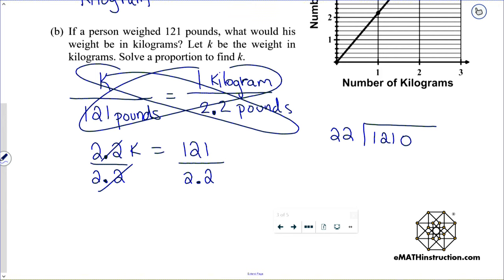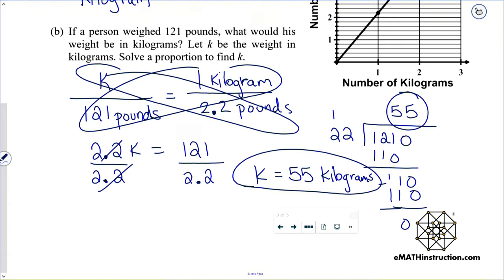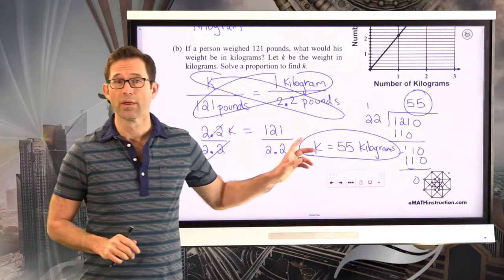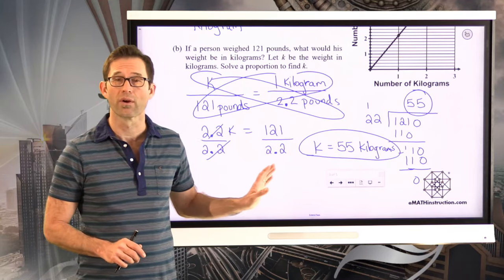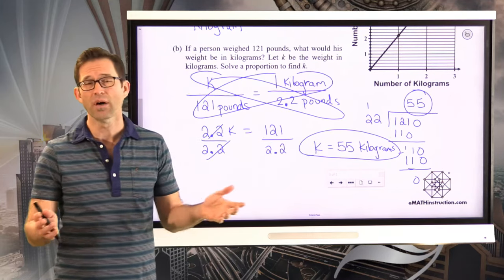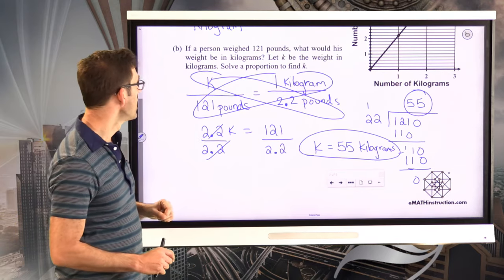But then we could say, all right, I think 22 goes into 121 five times. Let's take a look. We get 110. Subtract. Oh, there's another 110. That's another 55. And subtract and get zero. It's, of course, completely okay to be doing this with your calculator at this point, given that we've introduced it. But there we have it. K equals 55 kilograms. Probably quicker to do it with a calculator, especially after you've set up the equation work here rather than do the long division. But easy enough as well. All right. Let's keep going.